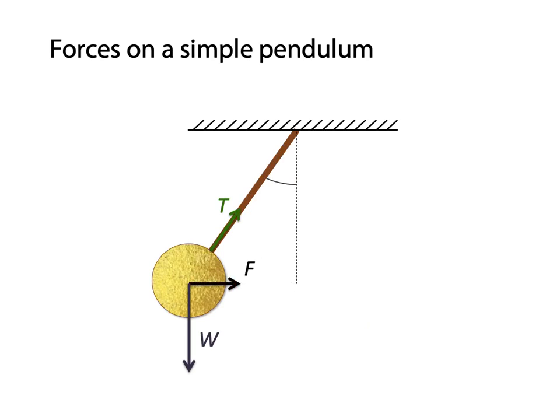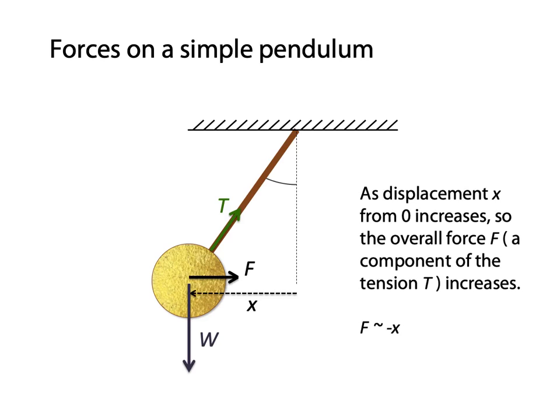So the restoring force is the force in a straight line back towards the center, the equilibrium position. And that's obviously related to both the size of the tension force and the angle. So that varies over time. As displacement increases, the overall force also increases. Force is directly proportional to the displacement. But notice this is an opposite direction. Force is measured in the direction it's acting in, which is always towards the equilibrium position, whereas displacement is always measured away from the equilibrium position. So f is proportional to negative x.